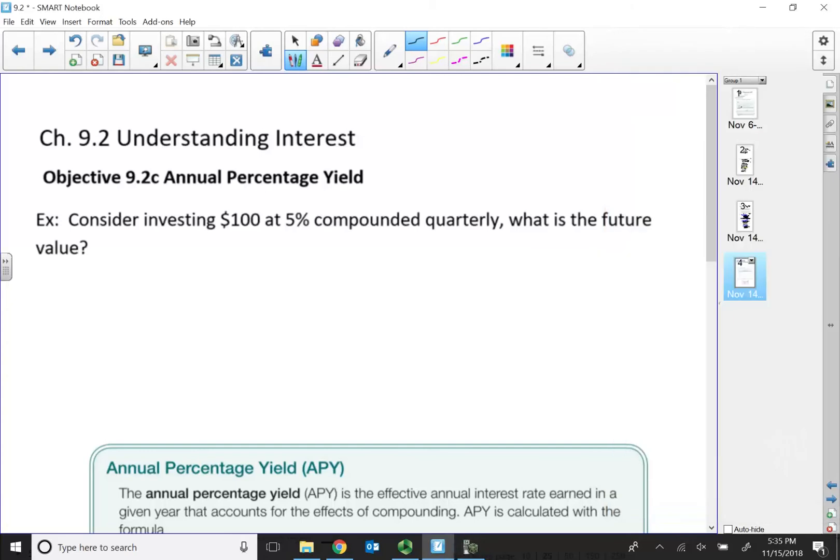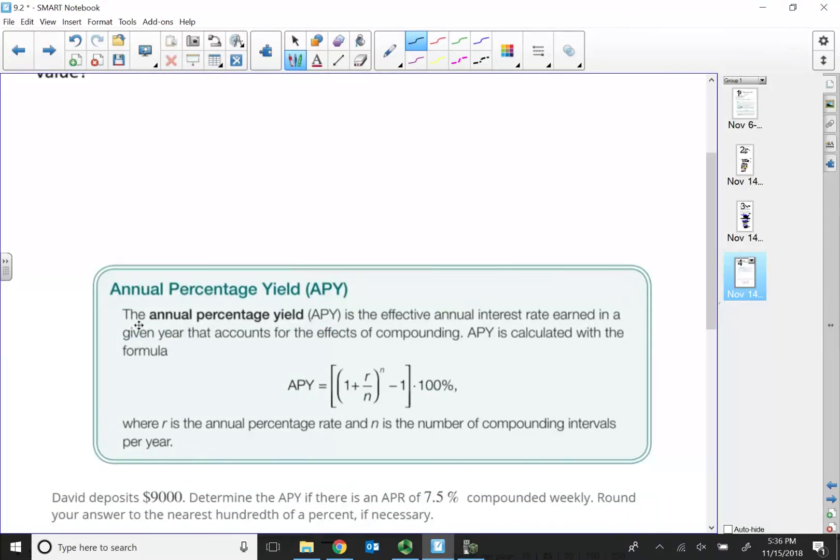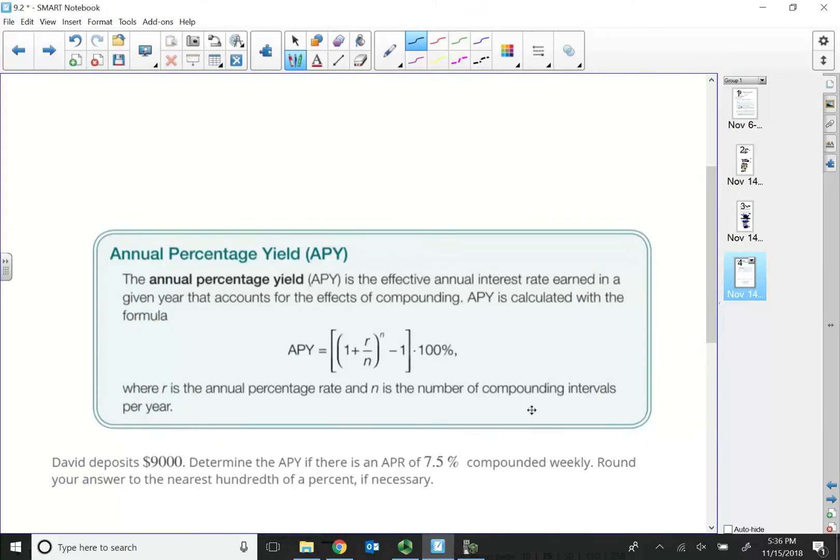Back to Math 155, section 9.2. In this lecture video, let me explain to you what an annual percentage yield means. So this is something I got from the textbook. It says the annual percentage yield, APY, is the effective annual interest rate earned in a given year that accounts for the effects of the compounding. So this is a continuation of our compound interest formula.